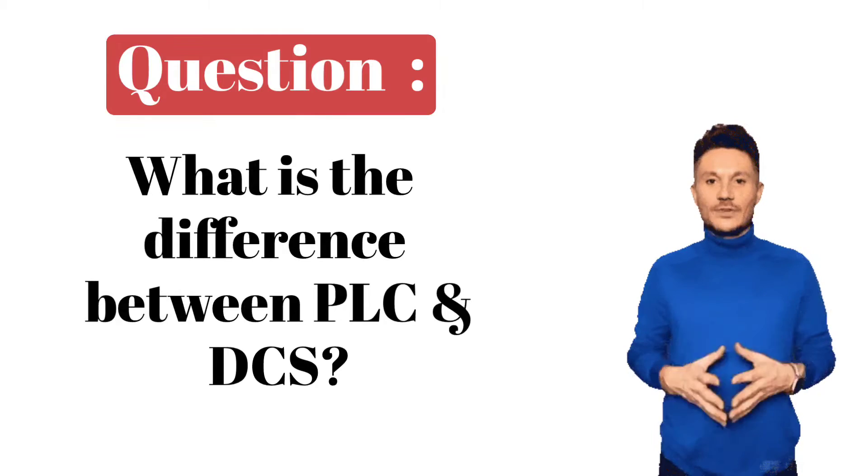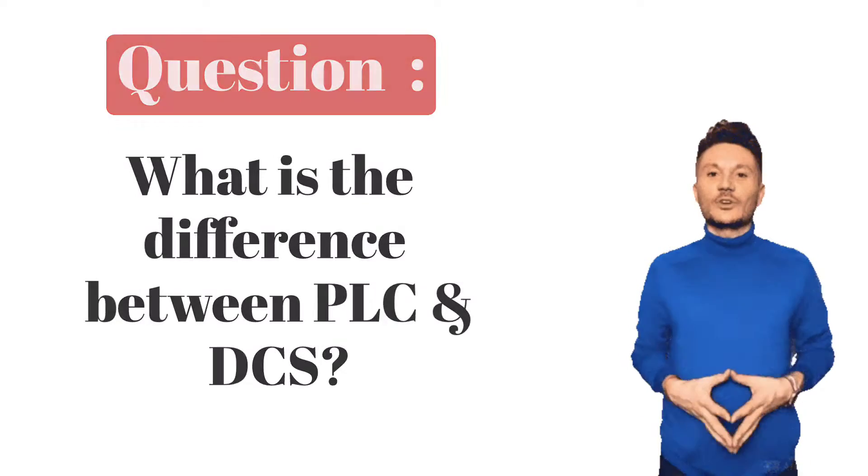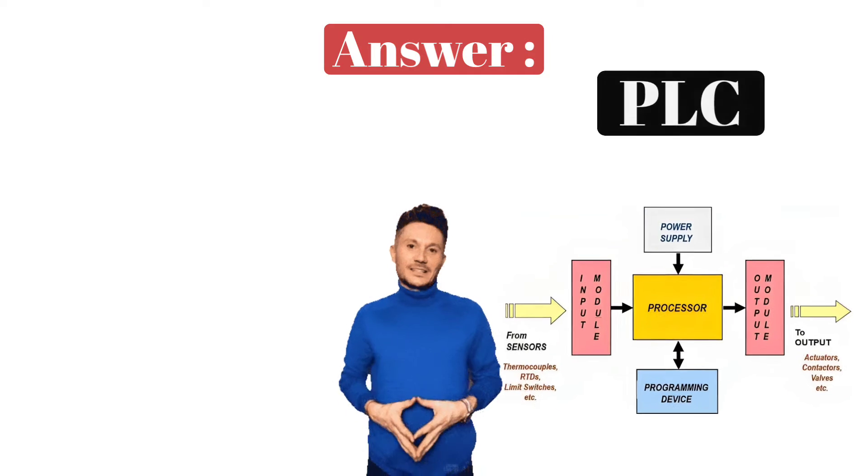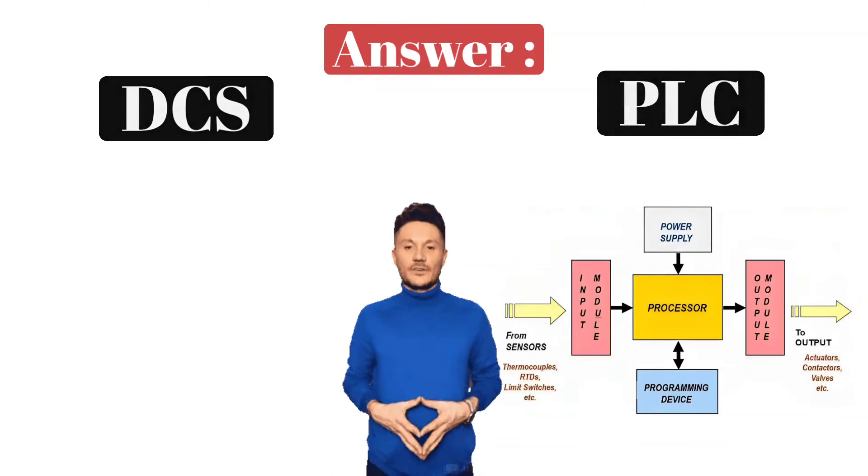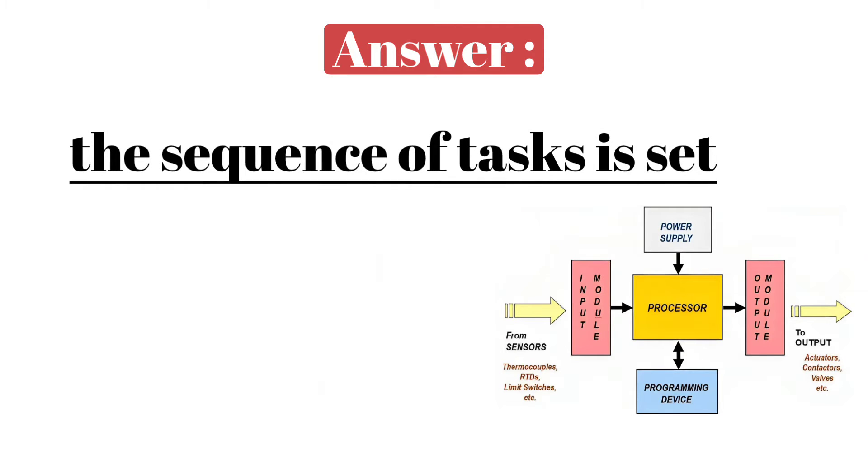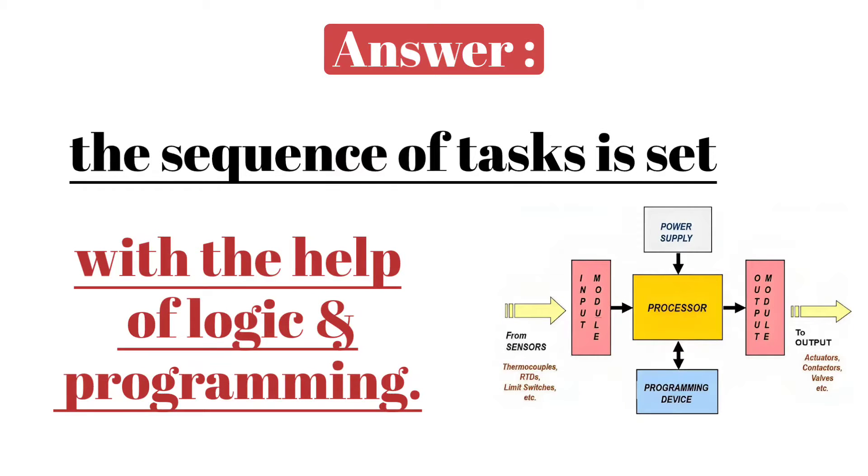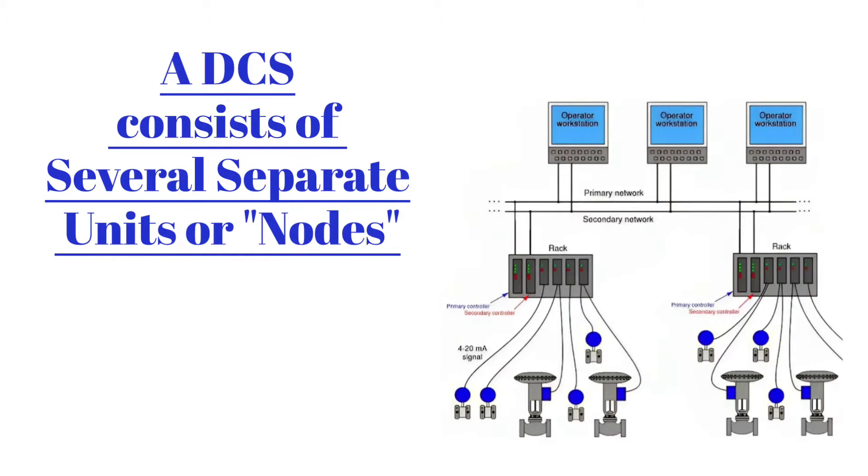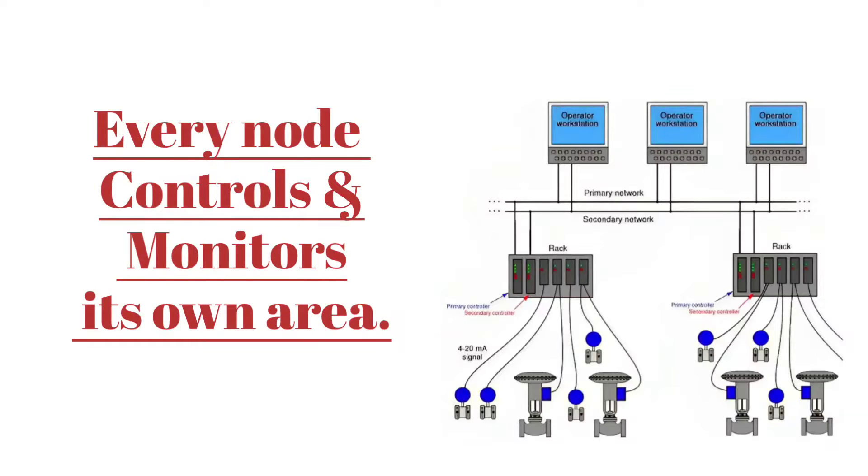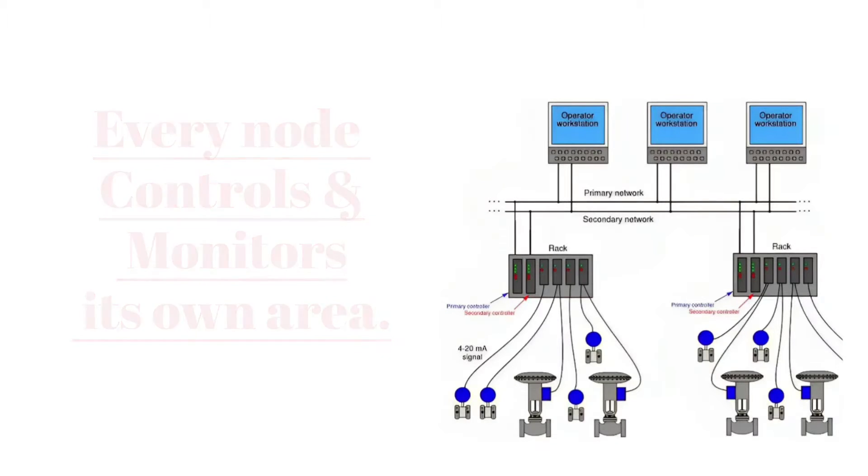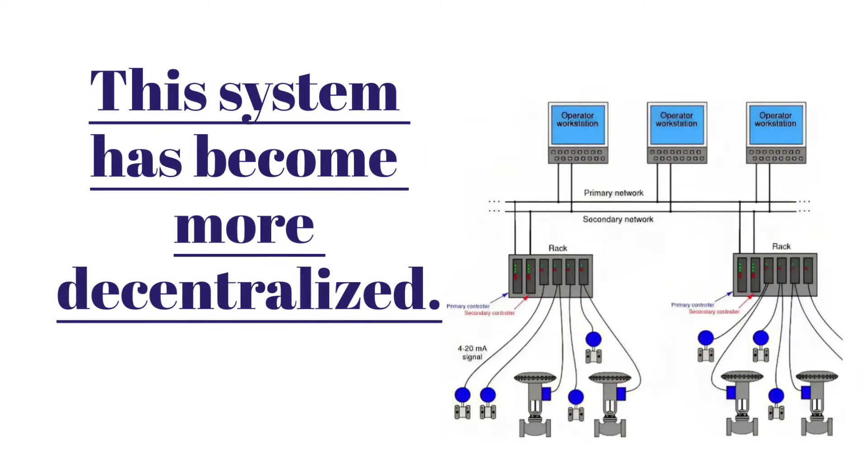Next question is, what is the difference between PLC and DCS? Both PLC and DCS are used for industrial automation. But in PLC, the sequence of tasks is set with the help of logic and programming. DCS consists of several separate units or nodes that are connected within a larger network. Every node controls and monitors its own area. This system has become more decentralized.